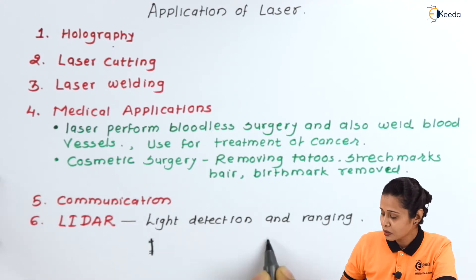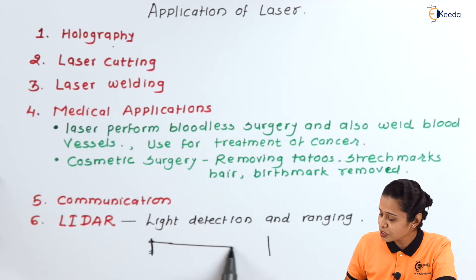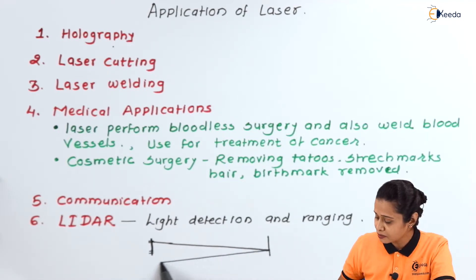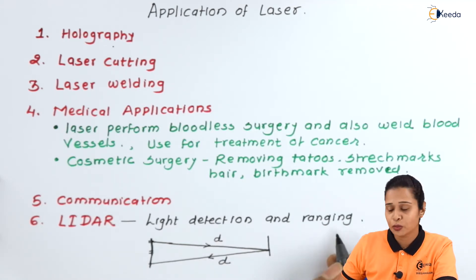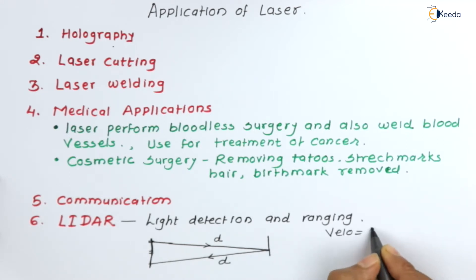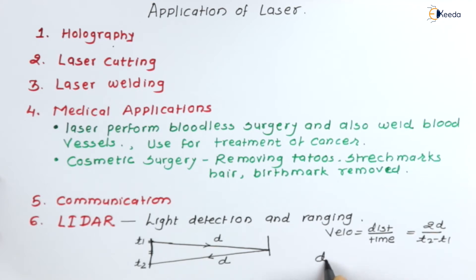For example, if we have one object here and another object here, and we want to find the distance between them, we send a laser beam from the first object and this laser beam will reflect back. The distance covered is D going forward and D returning. We know the formula: velocity is equal to distance upon time. The time of departure is T1, and the time it returns to the first object is T2. Hence, the time elapsed is T2 minus T1.